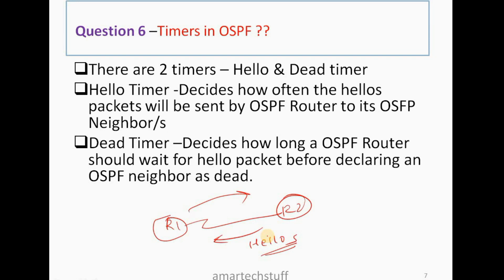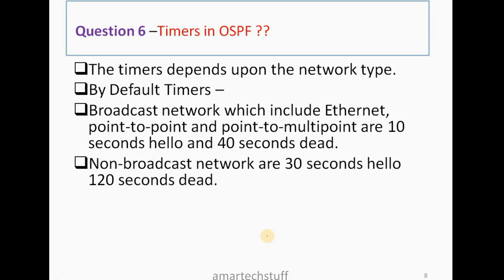In case R1 is not receiving hello packets from R2, or R2 is not receiving hello packets from R1, these OSPF routers wait for a certain amount of time before declaring the OSPF neighbor as a dead neighbor. That time is the dead timer. OSPF decides the hello and dead timers based on the type of the network.